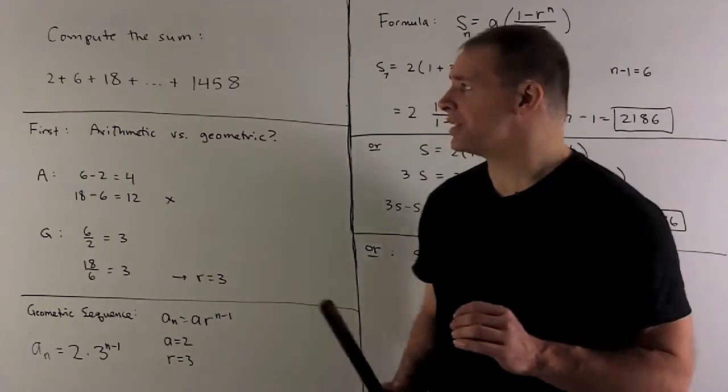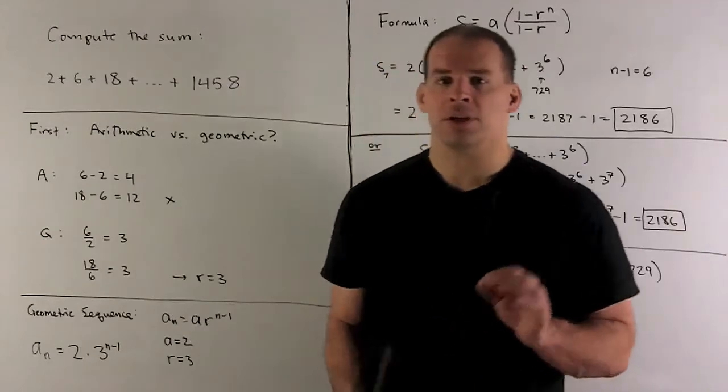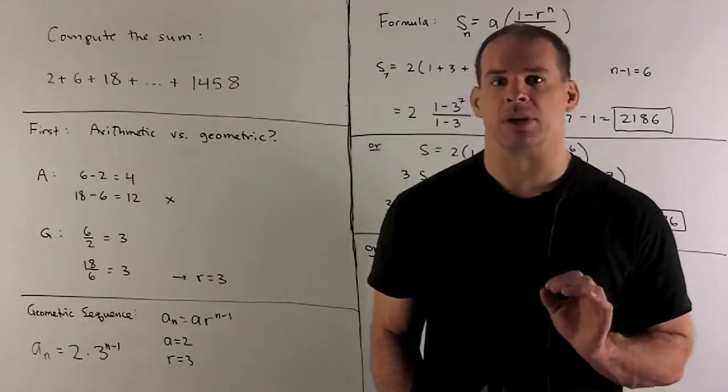In this case, 6 over 2 gives me 3. 18 over 6 gives me 3. So this looks like it's geometric sequence.